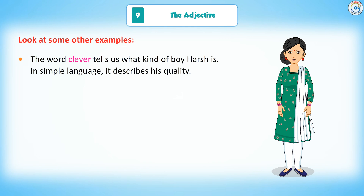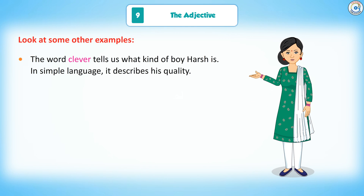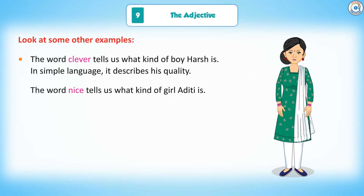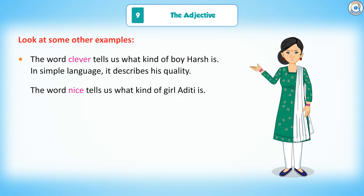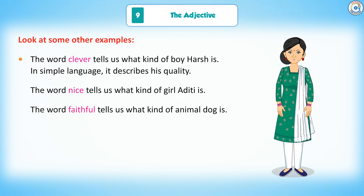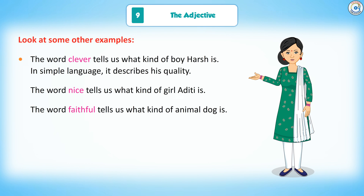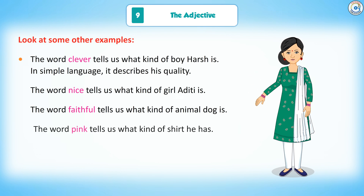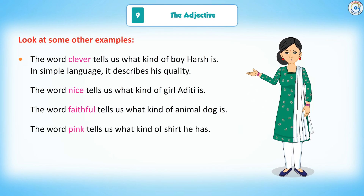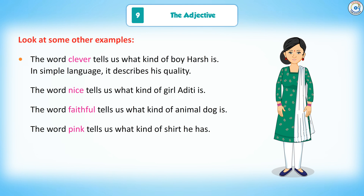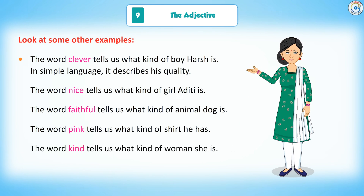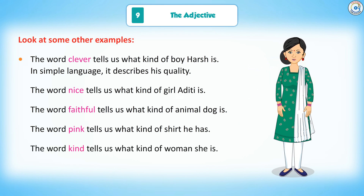The word 'clever' tells us what kind of boy Harsh is — it describes his quality. The word 'nice' tells us what kind of girl Aditi is. The word 'faithful' tells us what kind of animal the dog is. The word 'pink' tells us what kind of shirt he has. The word 'kind' tells us what kind of woman she is.